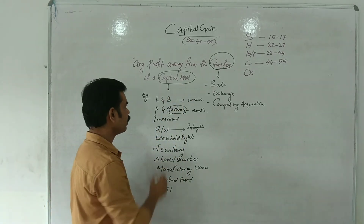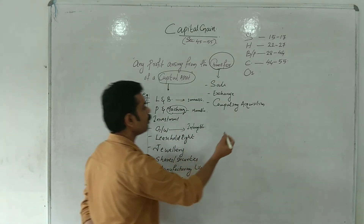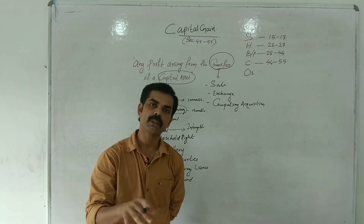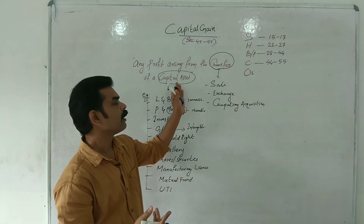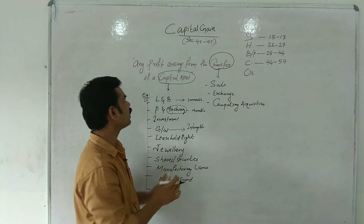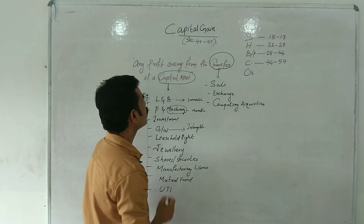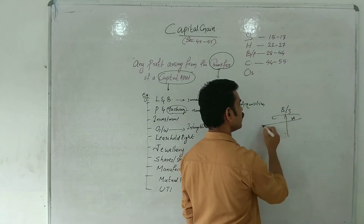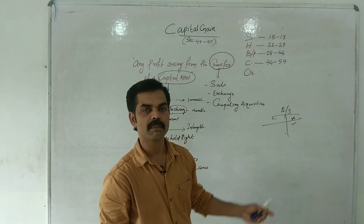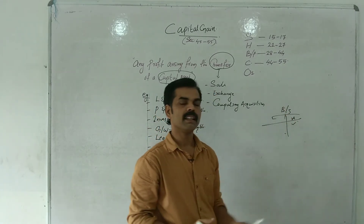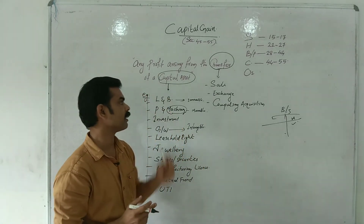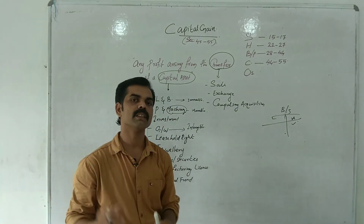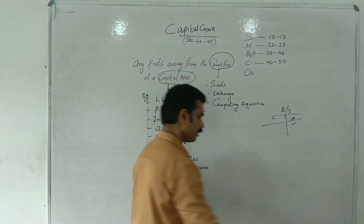Capital assets are assets shown on the balance sheet. The balance sheet has liabilities and assets — fixed assets, investments, current assets, and loans and advances. Fixed assets are long-term use assets and are considered capital assets.